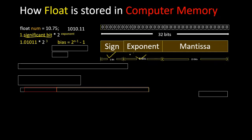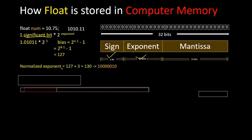The bias equals two to the power n minus one, minus one — this is the formula to calculate the bias value. Here n equals eight because we have eight bits for the exponent, so two to the power eight minus one, minus one equals 127. Now we're going to normalize this exponent: normalized exponent equals 127 plus 3, adding the exponent value with the bias value 127, which equals 130.